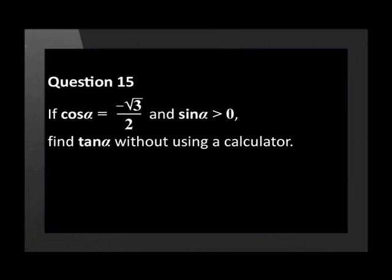Question 15. If cos alpha equals negative square root 3 over 2 and sin alpha is more than 0, find tan alpha without the use of a calculator.